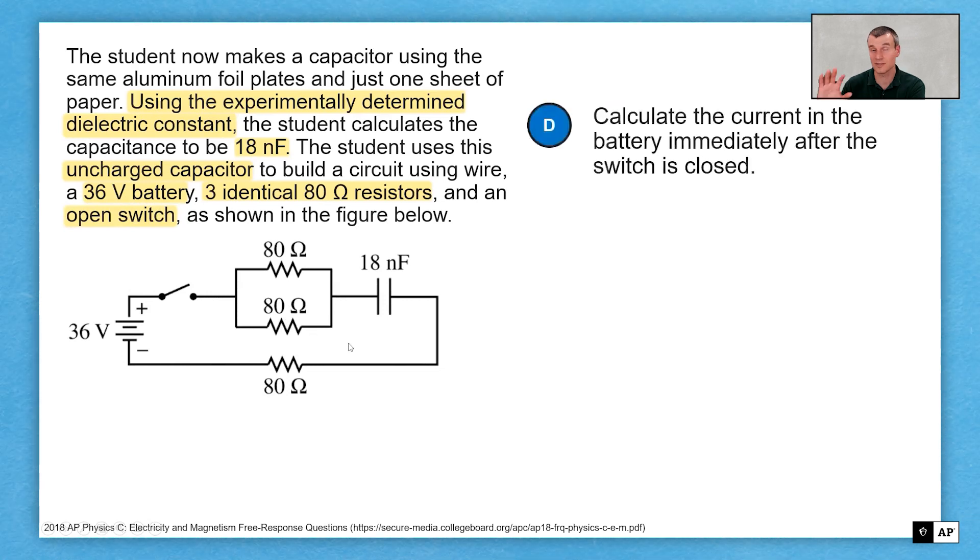But here's the key thing. We have this circuit that's kind of going on. We're using the same idea from solving for it experimentally. And now we're applying that thing that we solved for into a problem. We want to calculate the current in the battery immediately after the switch is closed.